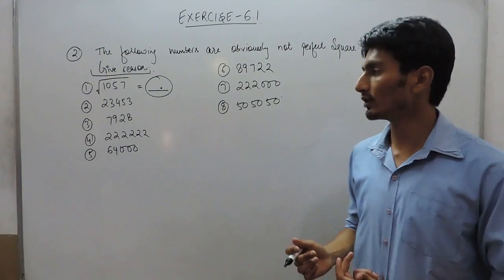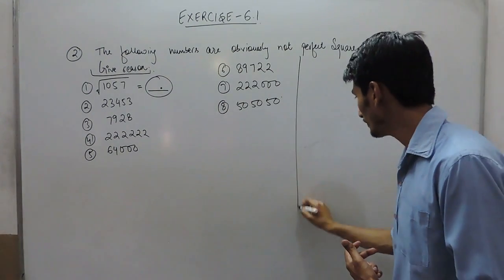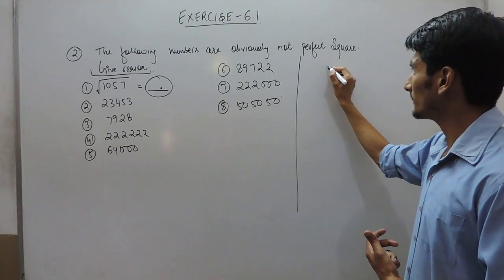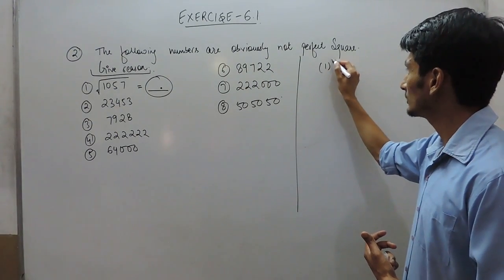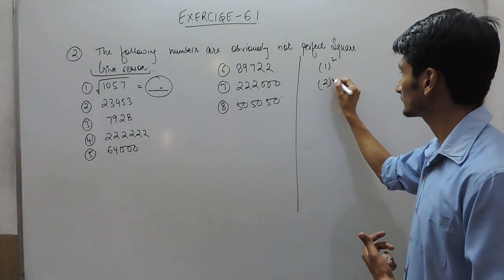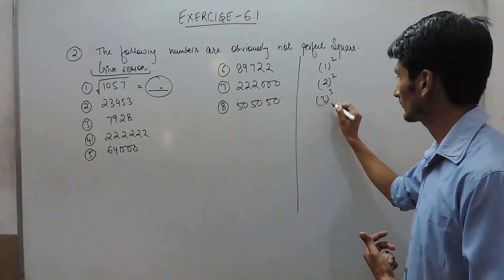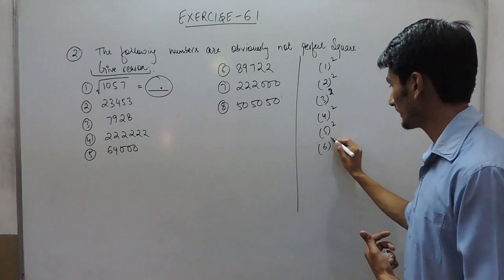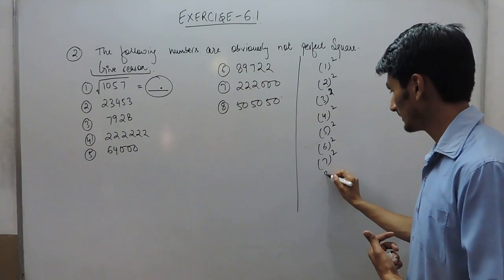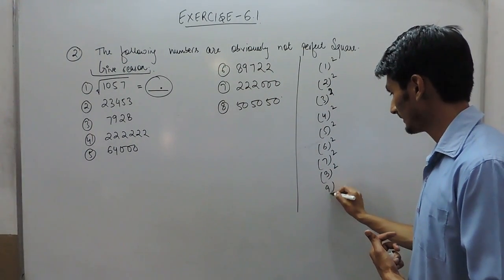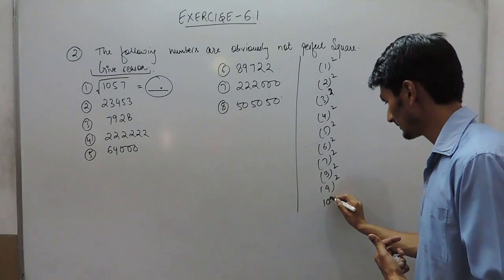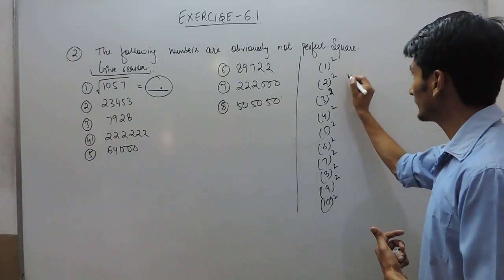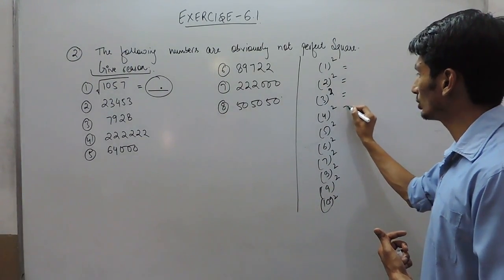one thing we have to know is that when we square the numbers: 1 squared, 2 squared, 3 squared, 4 squared, 5 squared, 6 squared, 7 squared, 8 squared, 9 squared, 10 squared.